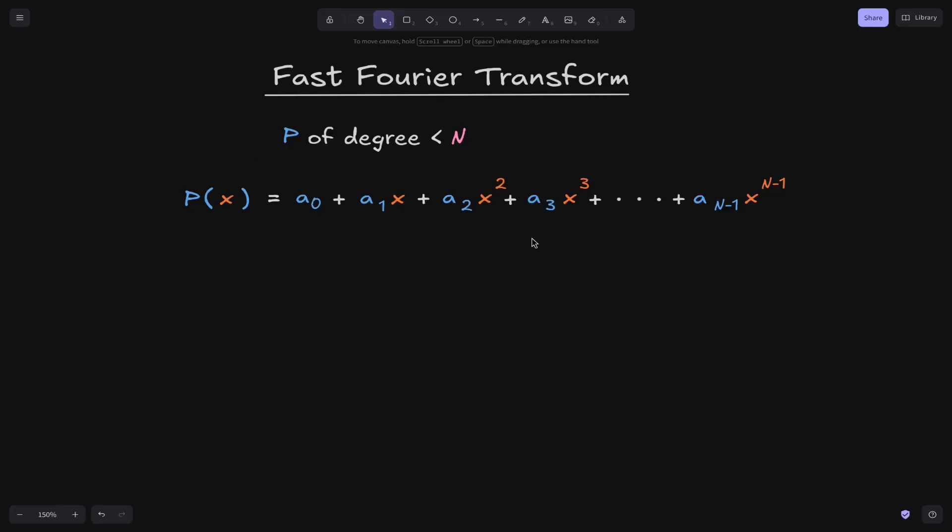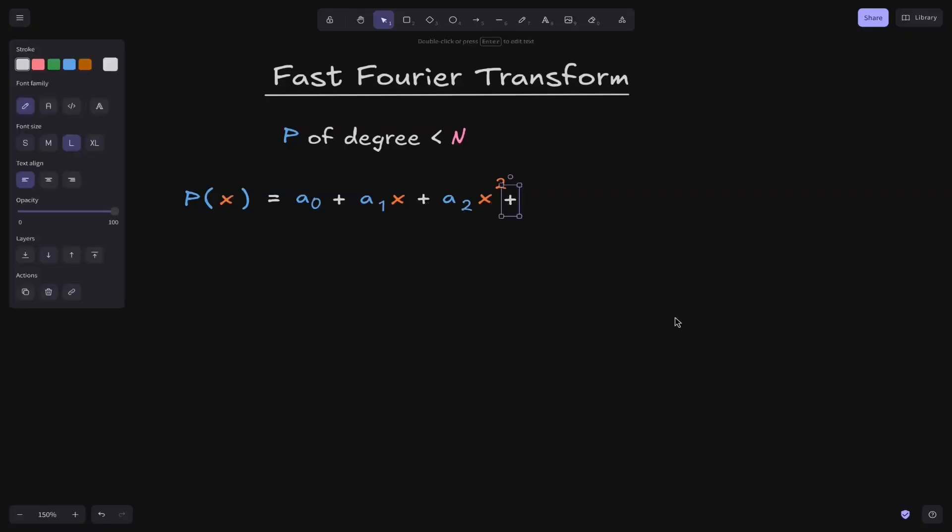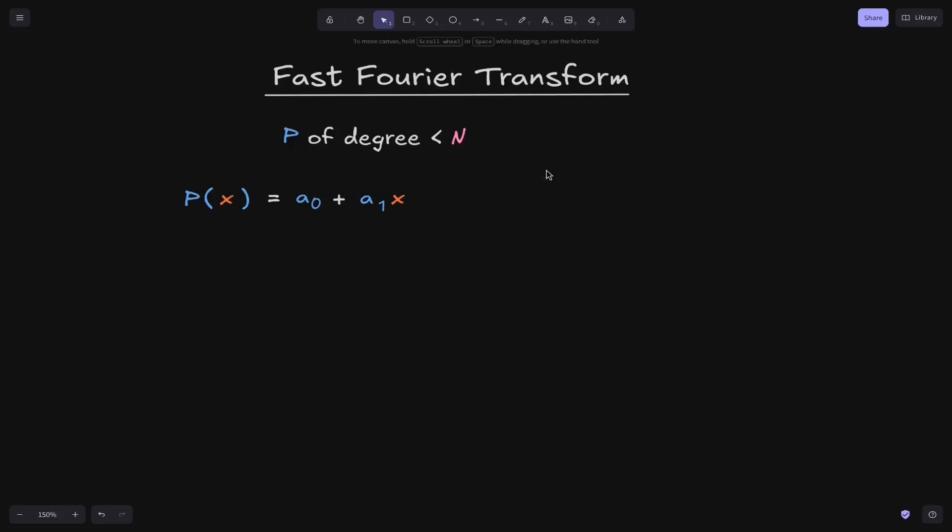As a more concrete example, you might have seen the quadratic equation, which will be of the form a0 plus a1 multiplied by x plus a2 multiplied by x squared. This will be a polynomial of degree 2. And as another example, you might have seen a linear equation. This will be a polynomial of degree 1.